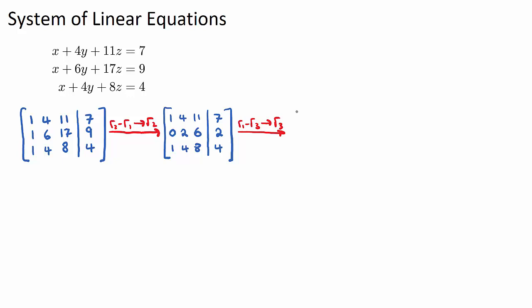Okay, so let's draw our matrix in. So row 1 stays the same. Row 2 stays the same. Now, our new row 3 will be row 1 minus row 3. So 1 minus 1 is 0, 4 minus 4 is 0, 11 minus 8 is 3, and 7 minus 4 is 3.